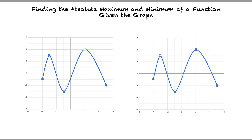In the first graph, we can see there are two high peaks at the coordinates negative 3 and 3, and 2 and 4. The highest peak is located at x equals 2, but because there is a hole, there is no absolute maximum. If the hole is not at the highest peak of the function, will we have an absolute maximum?